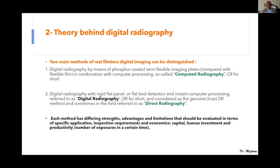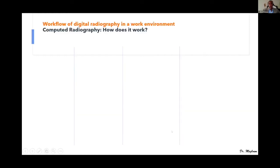There are two main methods of digital radiography — computerized radiography and digital radiography. Each method has different strengths, advantages, and limitations that should be evaluated in terms of specific application inspection requirements, economics, capital investment, human resources, and productivity — meaning the number of exposures achievable in a certain time.